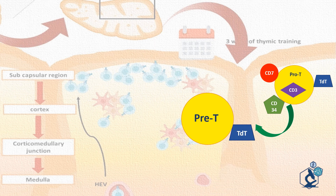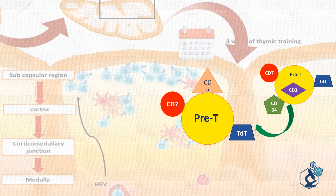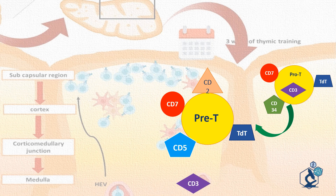Pre T cells are characterized by expression of TDT, CD7, CD2, and CD5. CD3 and CD7 are pan T cell markers, meaning they are present at all stages of T lymphocyte development. Even pre T cells express CD3, but it is cytoplasmic. CD34 may be present at the first two stages and is never expressed beyond the pre T stage. CD2 is expressed from the pre T stage onwards. Pre T cells are initially negative for both CD4 and CD8, and are also known as double negative T cells.